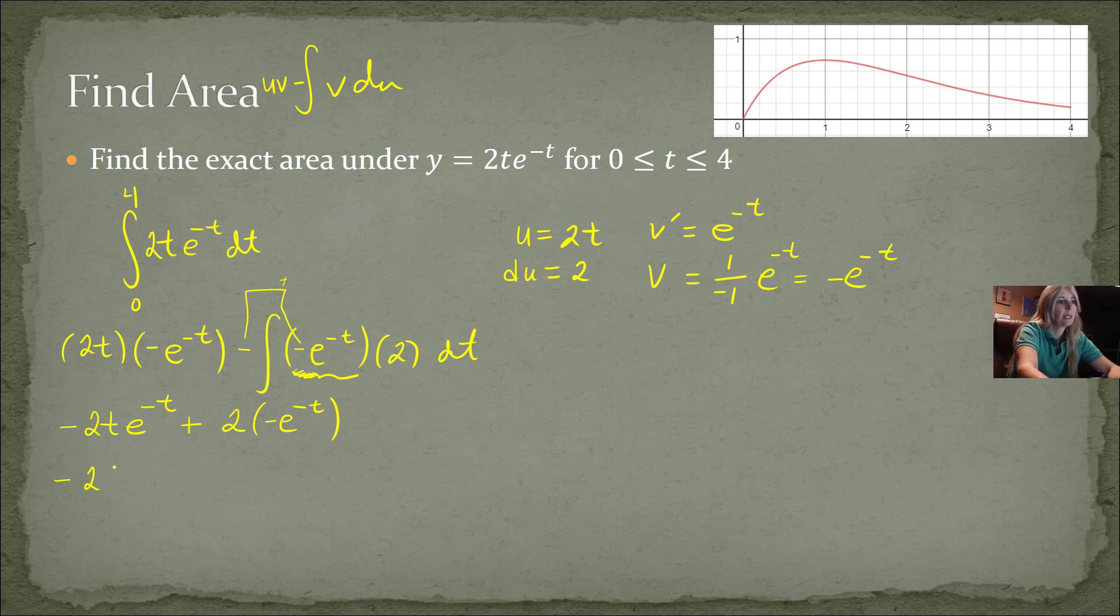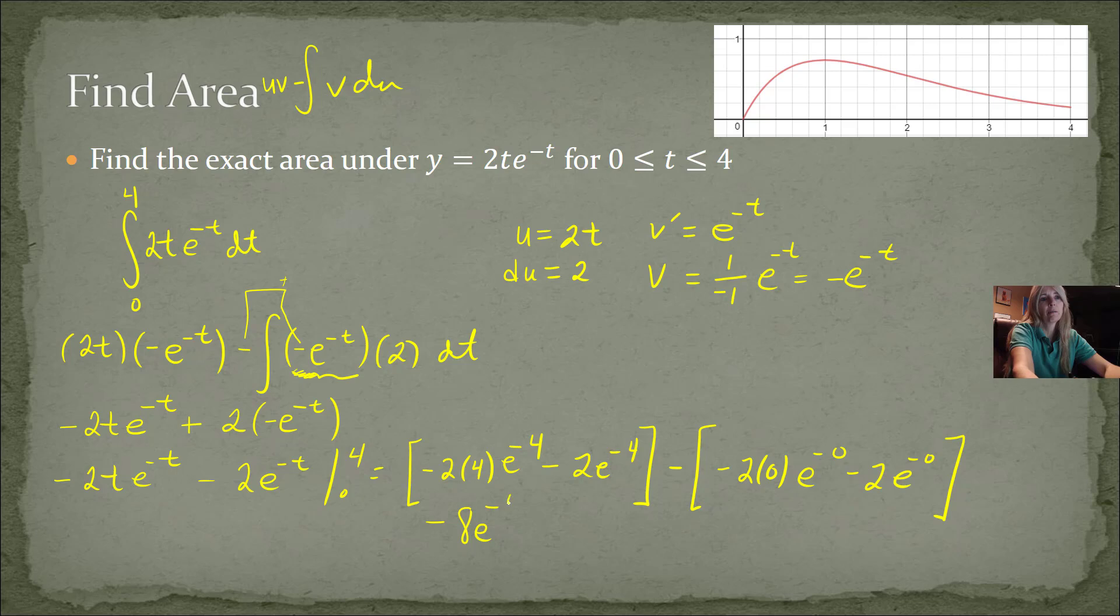And so then I could just write this as 2e to the negative t. And this is what I'm evaluating from 0 to 4. So now I'm to the part doing the fundamental theorem of calculus, the f of b minus f of a. In this case, the b is 4. So I plug in 4 everywhere I see a t times e to the negative 4 minus then my f of a. I plug in a 0 everywhere I see a t. Negative 0 minus 2e to the negative 0. And so here I get negative 8e to the negative 4th minus 2e to the negative 4th.